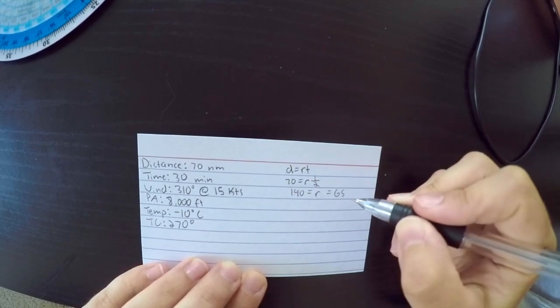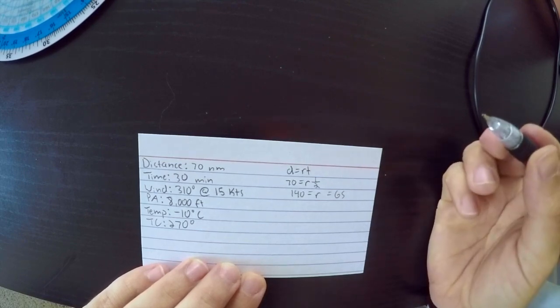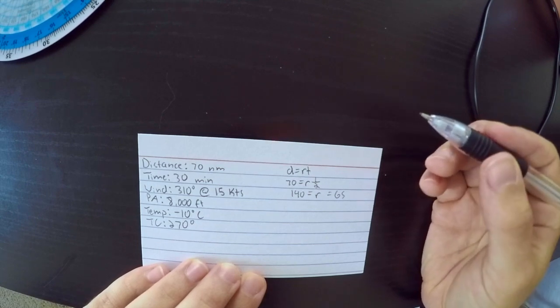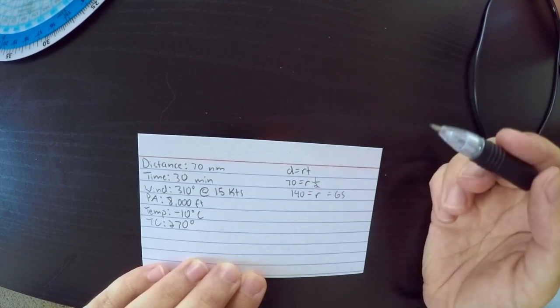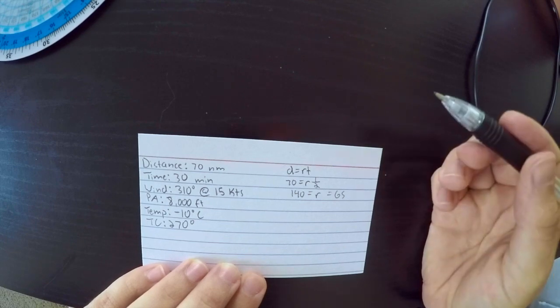Now that we have our ground speed, we need to find our true airspeed. And your true airspeed is just how fast you move through the air. Your ground speed and your true airspeed are generally different, because if you have a headwind or a tailwind, it can affect how fast you're moving over the ground.